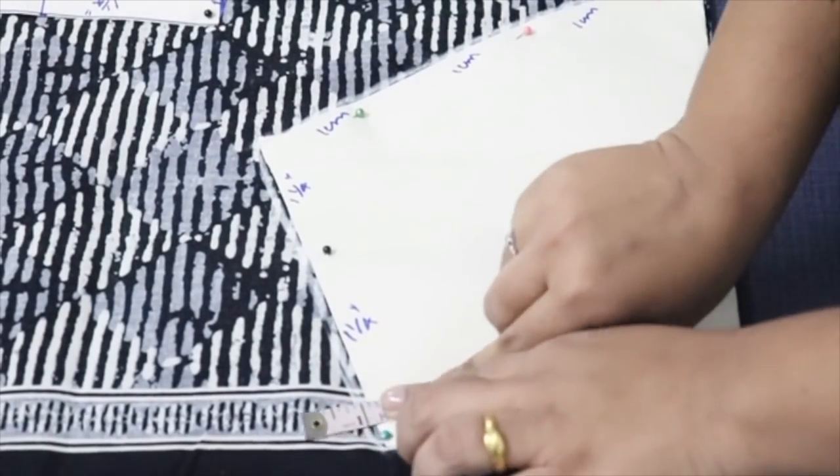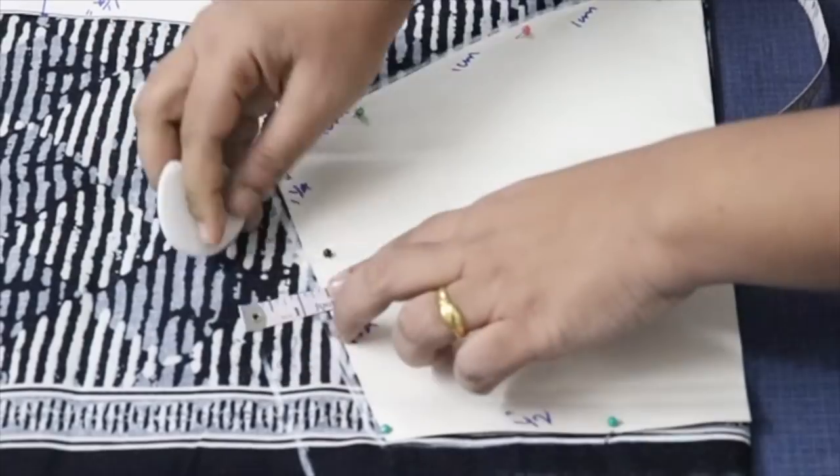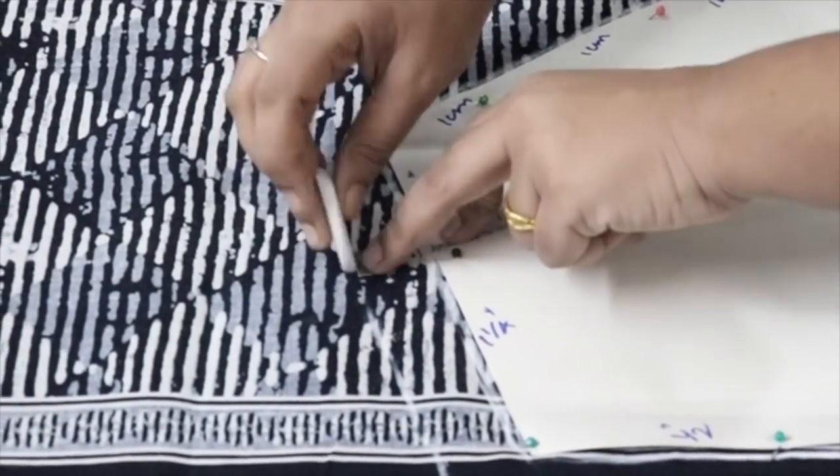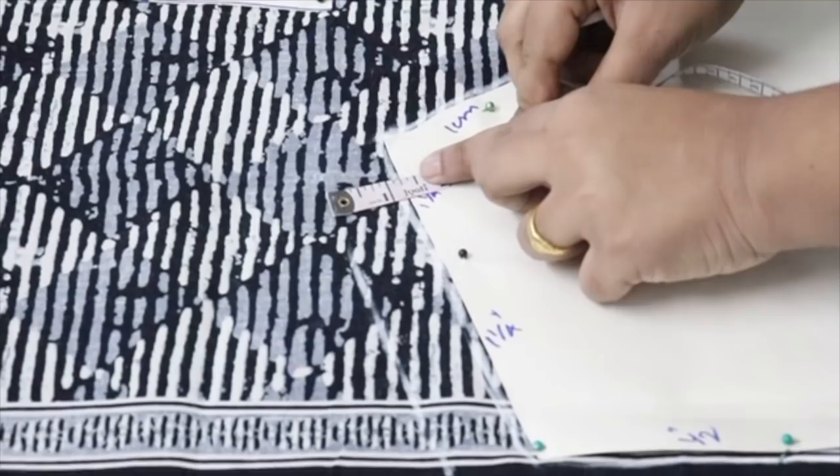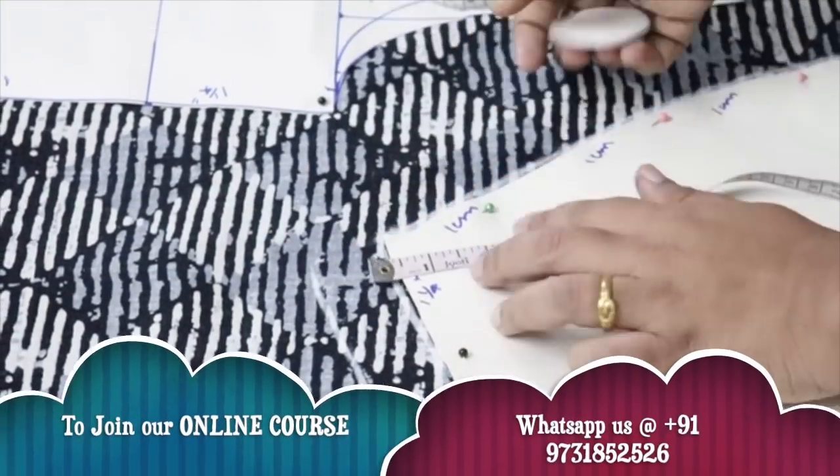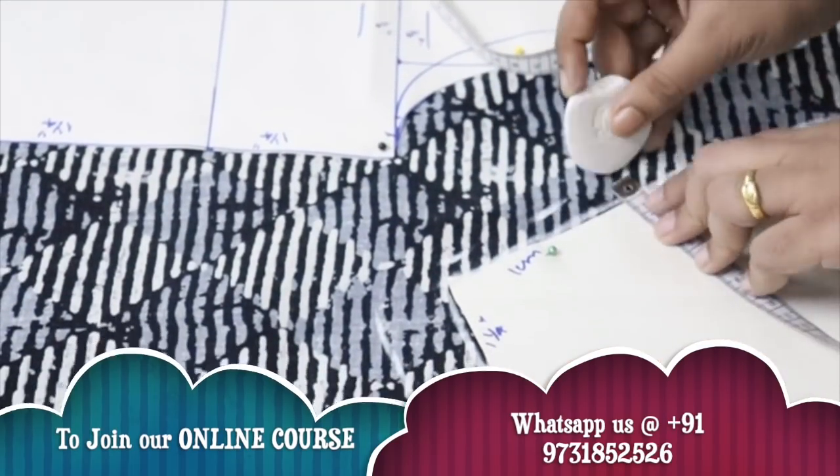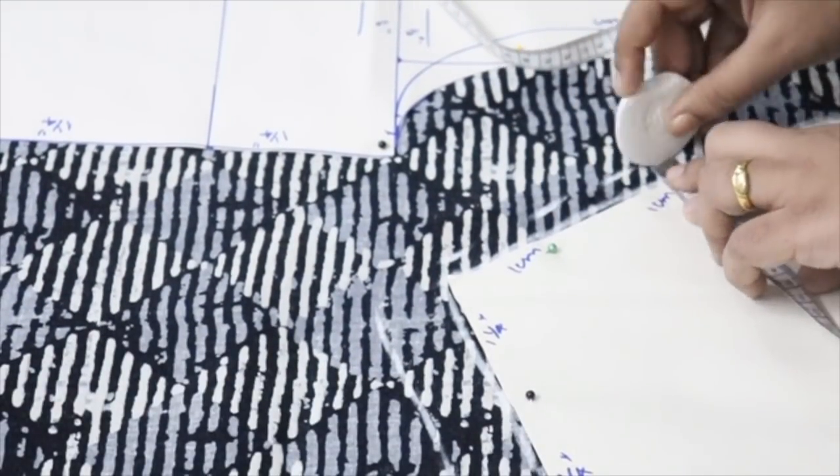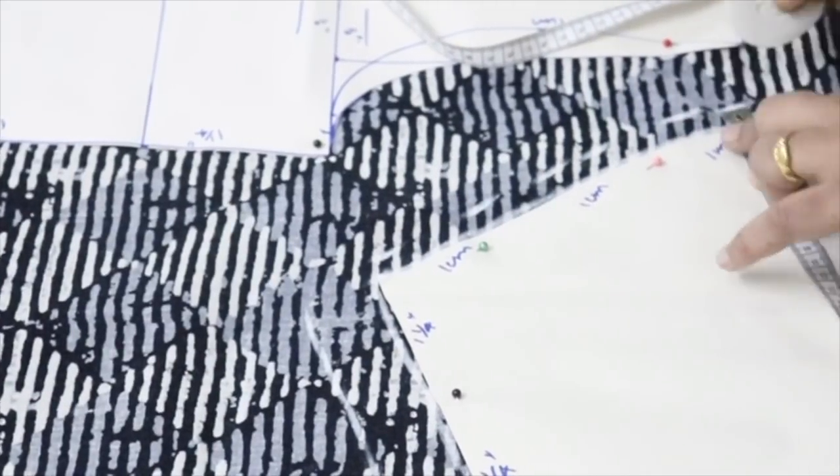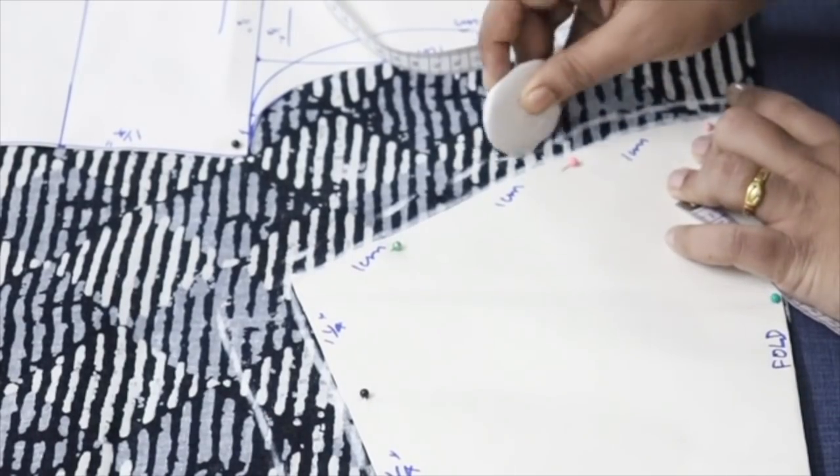Mark the exact marking first. Because we have to give the stitch on the exact marking. So mark the exact marking first. After marking exact marking, mark the seam allowance using the tape. So side I am marking one and one fourth. So arm part one centimeter.